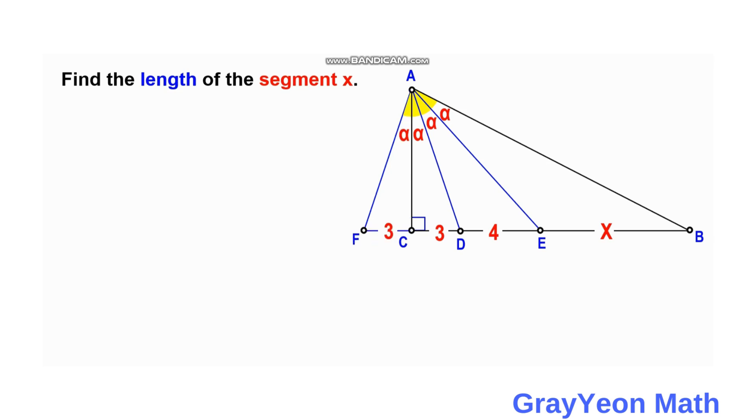So FC will be also three, and this will be also alpha. Next, we label the side AB as M, and this side AD, let's call this as N. And since AF is congruent with AD, this will be N also.